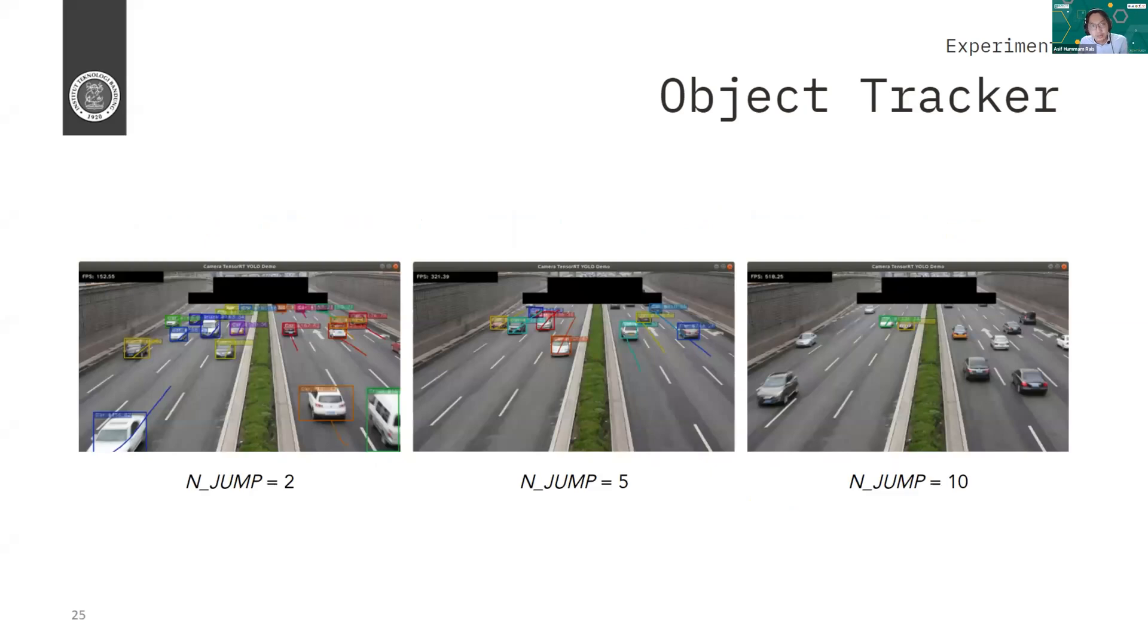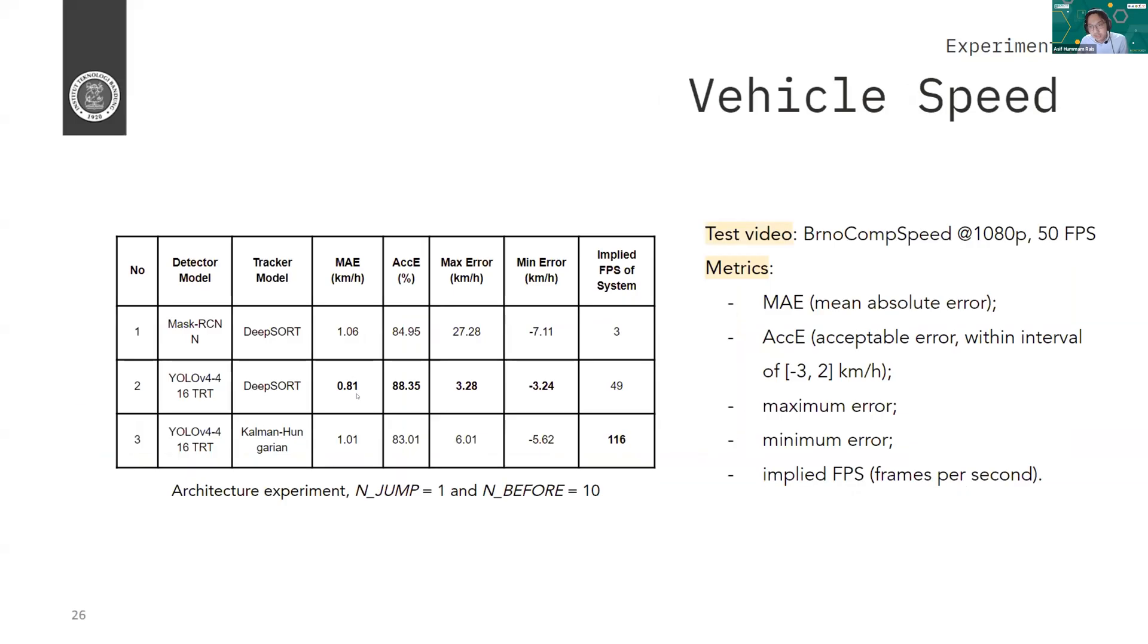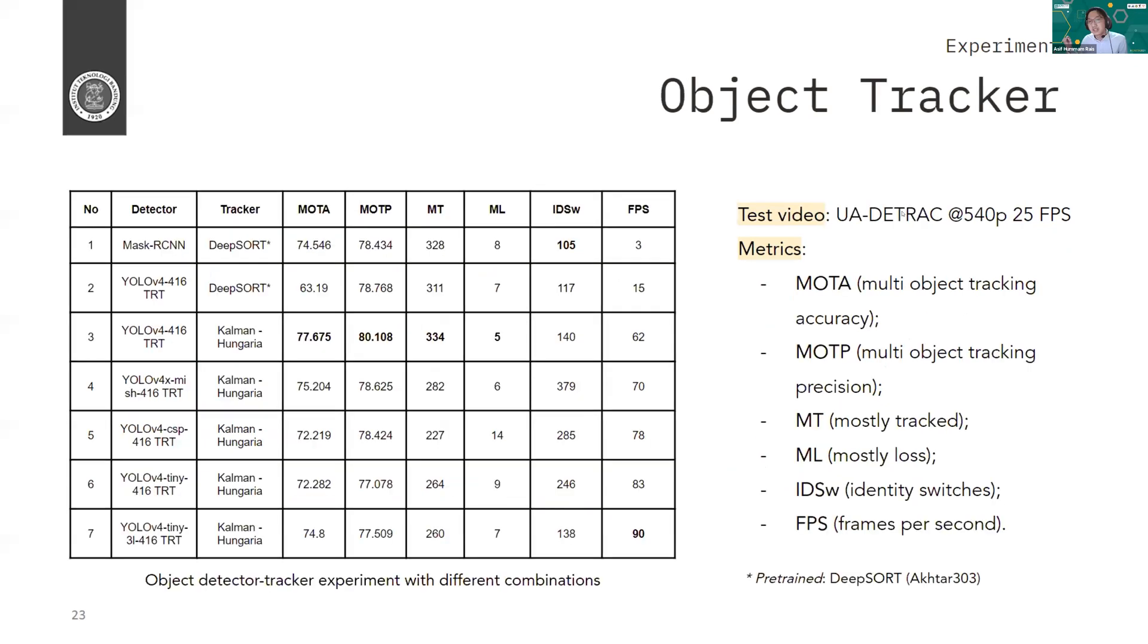So now for the vehicle speed estimation itself, we found that the proposed system has better MAE, mean average error and FPS compared to the baseline. But using the baseline tracker, which is DeepSORT with YOLO, which is the proposed detector we're using, it yields the best MAE at 0.81 at 49 FPS. But one thing to note is that the test video is using BrnoCompSpeed dataset, whereas the object tracker test video is using UA-DETRAC. So the UA-DETRAC one has like a lot of vehicles, whereas the BrnoCompSpeed one has much, much less vehicles. So as you can see here, if you use DeepSORT with YOLO, we actually only can yield like 15 FPS for many vehicles. But for lesser number of vehicles, we can yield 49 FPS.